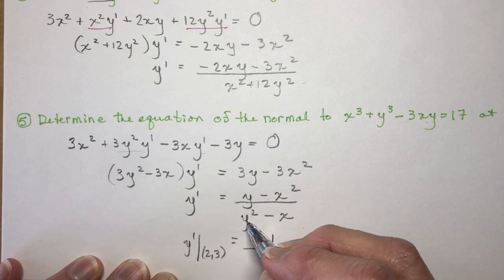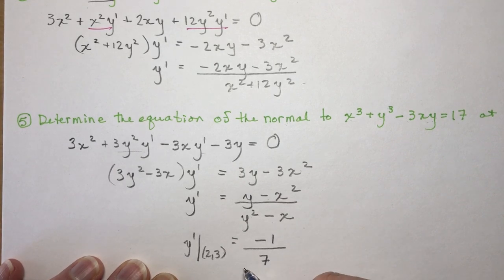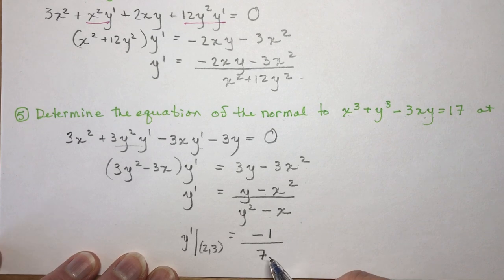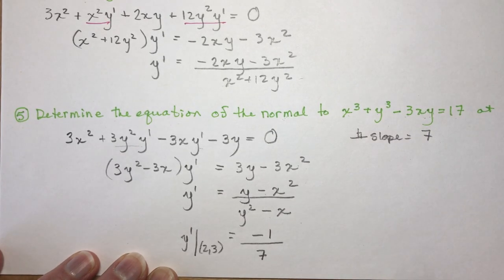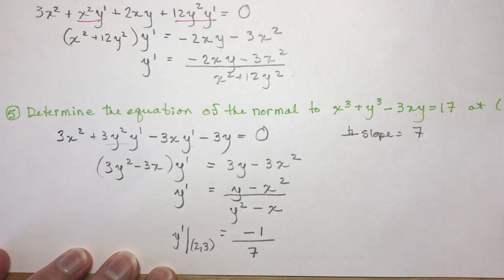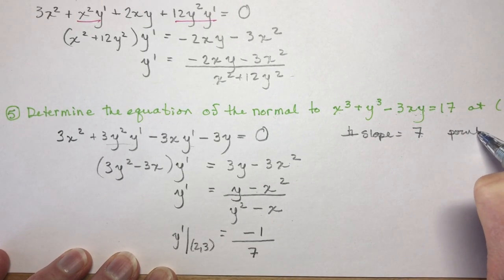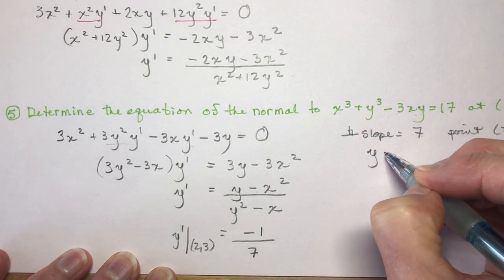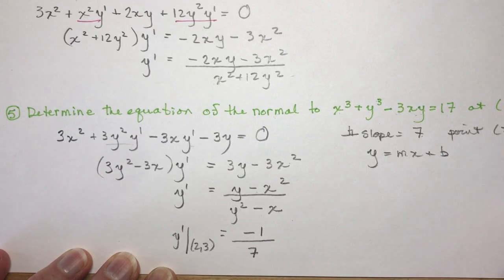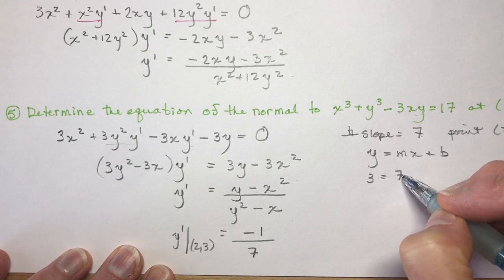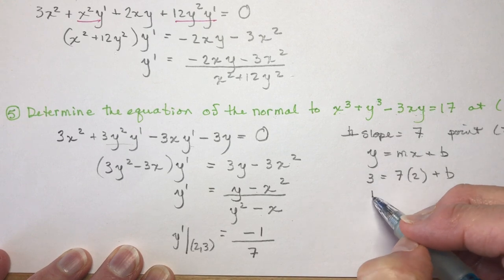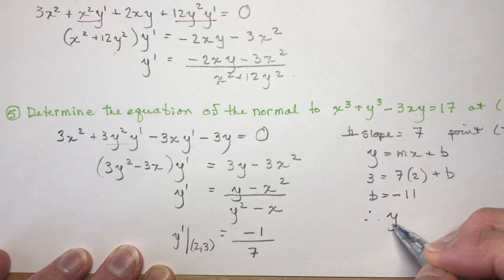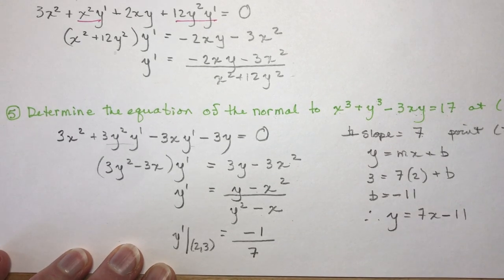Since we want the normal, the perpendicular slope is the negative reciprocal of −1/7, which is 7. Using the point (2, 3) with y = mx + b: 3 = 7(2) + b, so b = 3 − 14 = −11. Therefore the equation of the normal is y = 7x − 11.